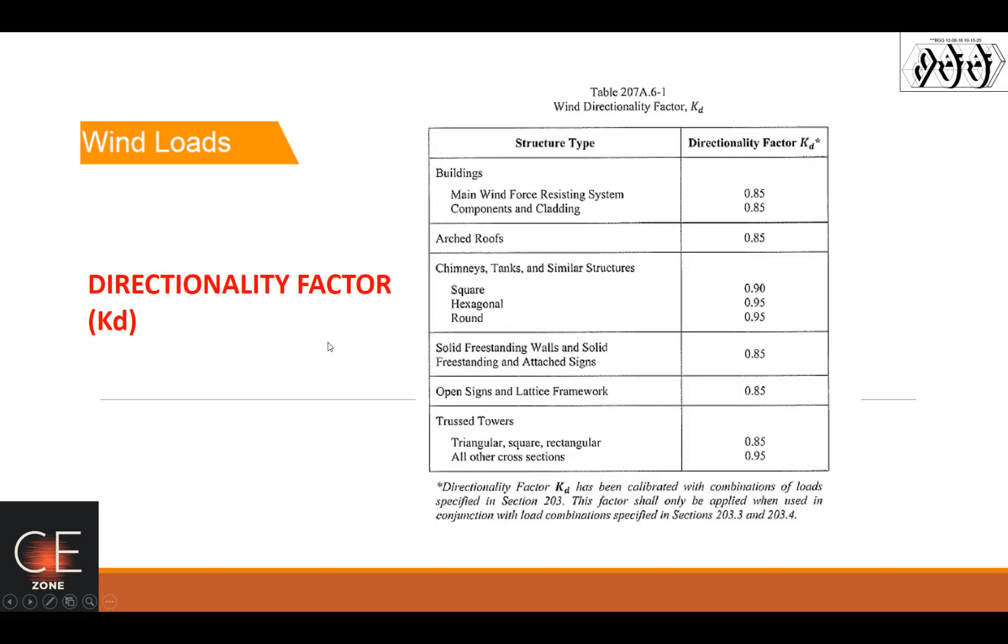And then the directionality factor, this depends upon the structure type. If you're designing your truss as a main wind force resisting system, you have a KD of 0.85. And then for components and cladding or for your walls, that would be 0.85.